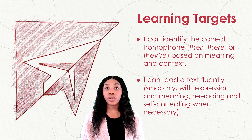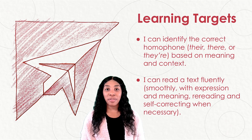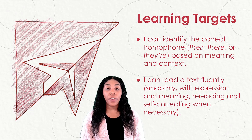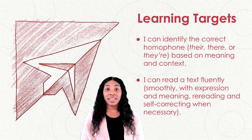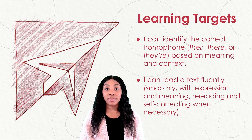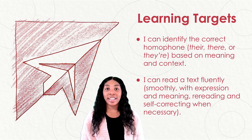We have two new learning targets for today. Please follow along with me as I read them. Our first learning target says: I can identify the correct homophones — their, their, or their — based on meaning and context. The second learning target says: I can read a text fluently, smoothly, with expression and meaning, rereading and self-correcting when necessary.